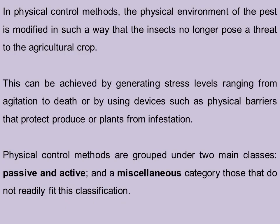In physical control methods, the physical environment of the pest is modified in such a way that the insects no longer pose a threat to the agricultural crop. This can be achieved by generating stress levels ranging from agitation to death, or by using devices such as physical barriers that protect produce or plants from infestation. Physical control methods are grouped under two main classes — passive and active — and a smaller miscellaneous category.